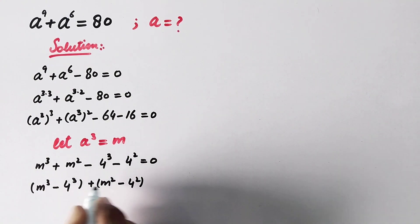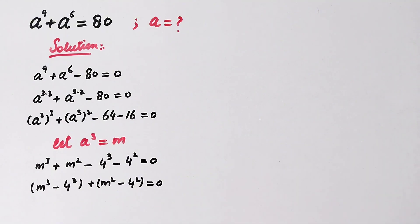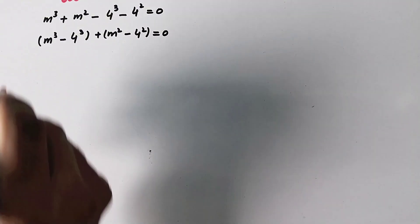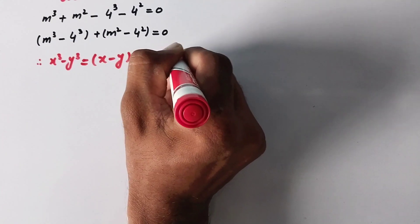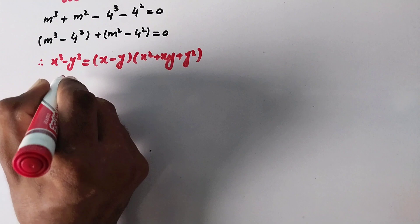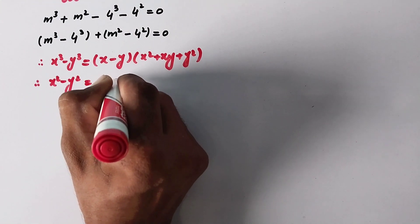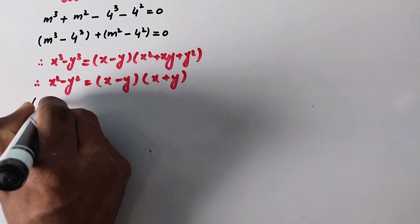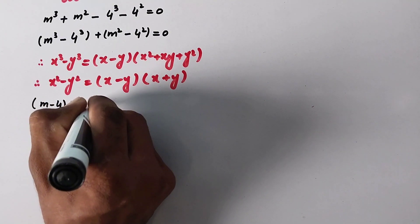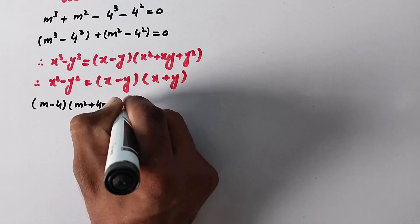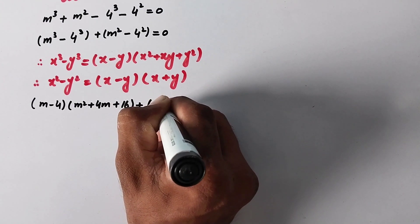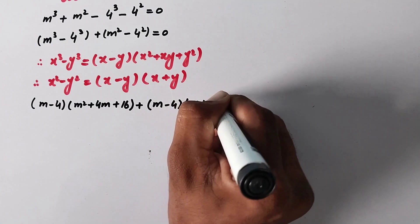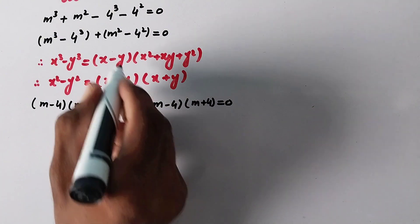There are two expressions and we can apply two algebraic formulas here. As we know that x cubed minus y cubed equals x minus y times x squared plus xy plus y squared, and x squared minus y squared equals x minus y times x plus y. So now we can write: m minus 4 times m squared plus 4m plus 16, plus m minus 4 times m plus 4, is equal to 0.